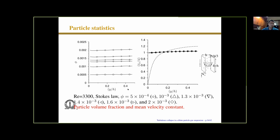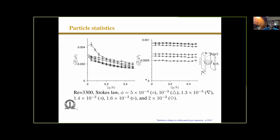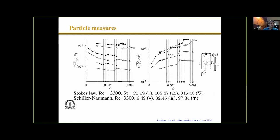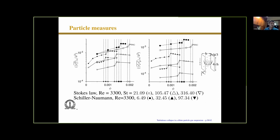Looking at the particle statistics, there's not that much happening on the particle side. The volume fraction is roughly constant across the channel. The mean particle velocity is roughly constant. There is a substantial slip at the wall compared to the fluid velocity. The mean-square velocities do change, but only by a factor of two or so — not a factor of 10 — when the transition takes place. The slight change that does occur is because of the change in the mean fluid velocity profile, not because the particle fluctuations themselves are changing. This is also seen for the spanwise mean-square velocity and the Reynolds stress.